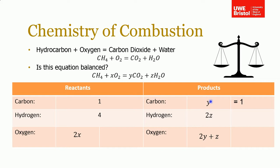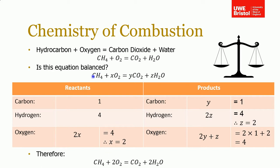We obviously know that Y is equal to one. And we know that two Z is equal to four, therefore Z is equal to two. So how many oxygens have we got on the right side? We said it's two Y plus Z, and substituting that in, we get four oxygens on that side, so we must have four oxygens on the left side. Therefore X is equal to two. If we plug X, Y, and Z back into our initial equation, it balances now. So we've got one methane reacting with two oxygen molecules to give one carbon dioxide and two water molecules. This is a good way to balance the equation.